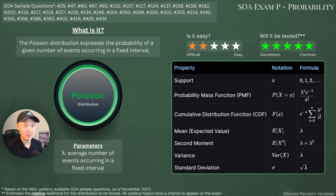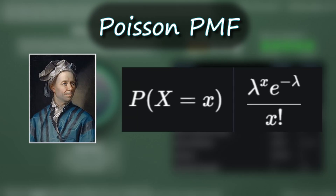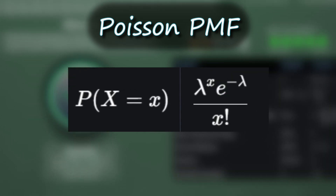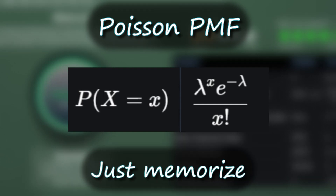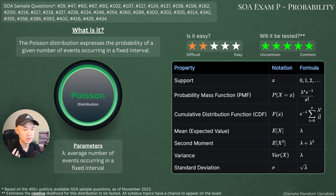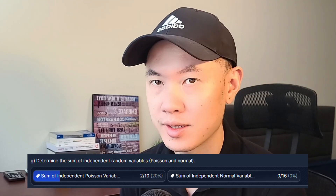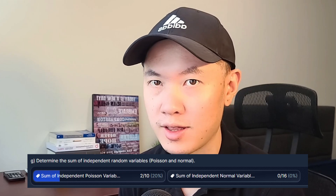At first glance, the PMF formula looks complicated, but there is a logical derivation. You can derive it from the binomial distribution as N approaches infinity and P approaches zero. But if your goal is to get through the exam, just memorize it. The Poisson distribution also has some nice properties: the mean is lambda and the variance is also lambda, so that's easy to remember. The sum of independent Poisson variables is also Poisson, and that's on the syllabus, so you'll definitely want to get some practice with that.